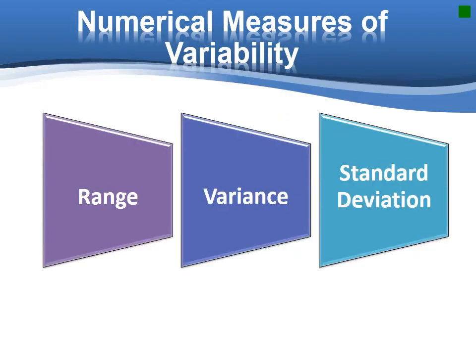Measures of central tendency provide only a partial description of a quantitative dataset. We need a measure of variability as well as a measure of central tendency to describe a dataset. There are three numerical measures of variability: range, variance, and standard deviation.